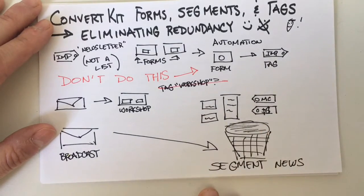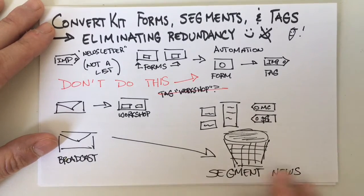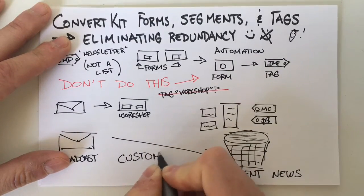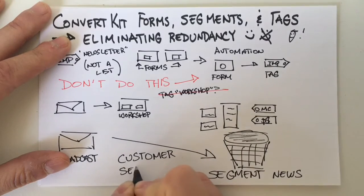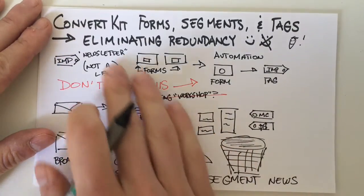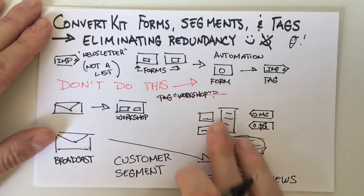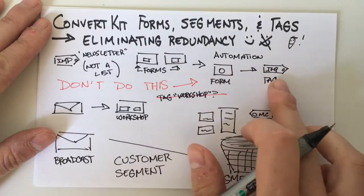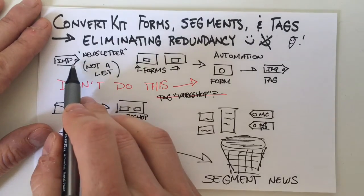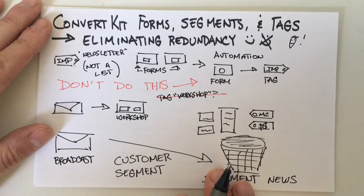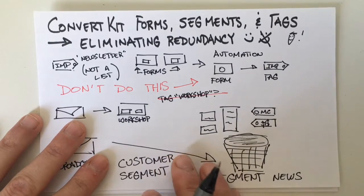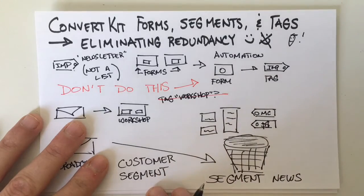It automatically updates when people come through. And I can do this for all kinds of different segments — it could be based on date of subscription, or I like creating one for customers, so people who have purchased things from me. Those could be tags or forms, depending on the integration. I hope you can see how some of these redundant rules can be eliminated. If you are adding a form to a tag just for the purpose of sending a newsletter based on an old imported tag of subscribers, it's much better to use the segment feature inside ConvertKit. I hope this makes sense and more fully explains the difference between forms, segments, and tags — how they're different, how they're similar, and how they can be most powerful for you. Thanks.